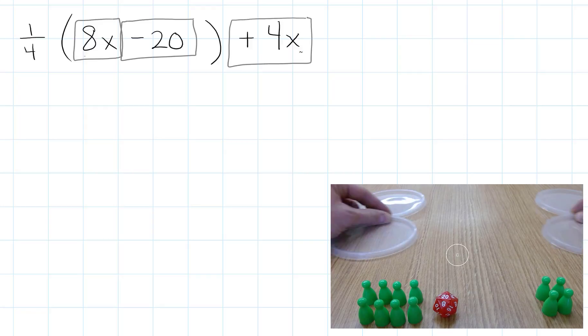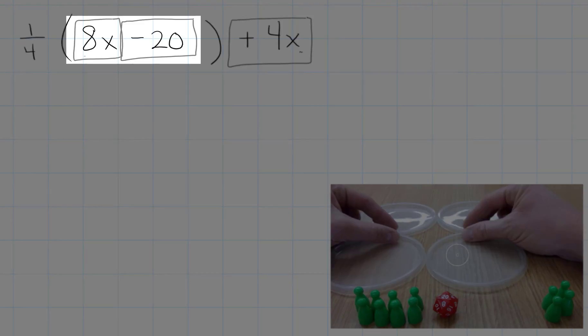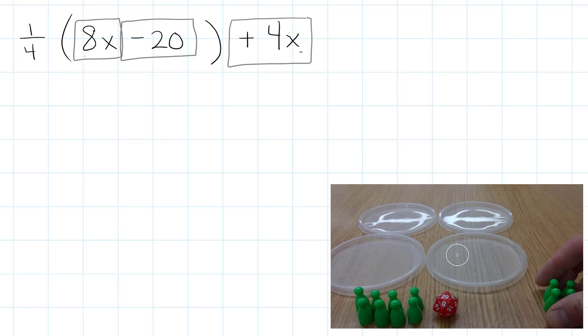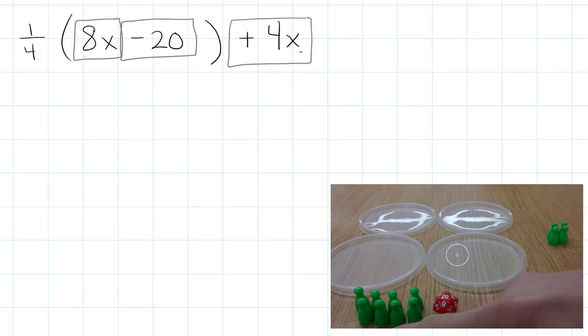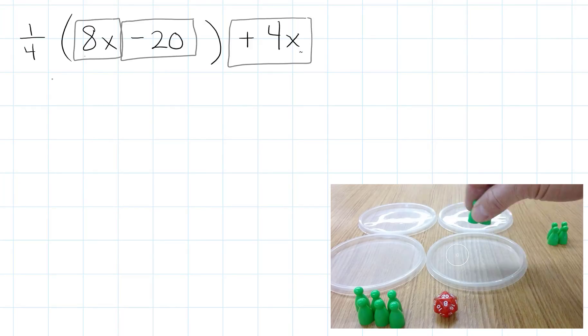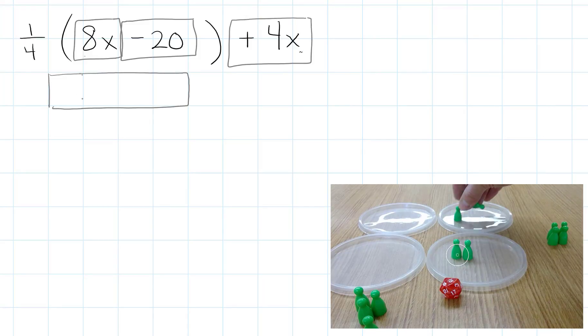So what we're going to do now is we are going to take our 8x's and our negative 20, and we are going to split it up into 4 equal sections. And so I'm going to put my 4x's off to the side, and I'm going to take my 8x's down below, and I'm going to create 4 sections of them.